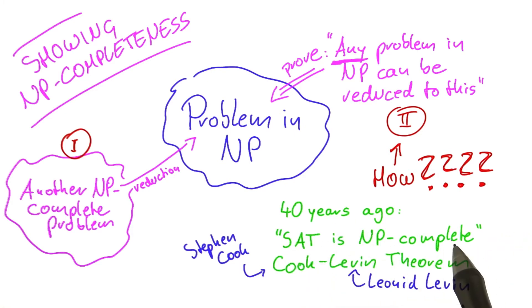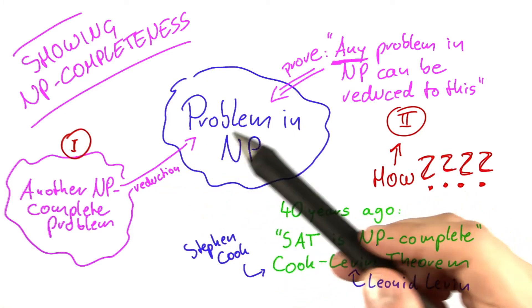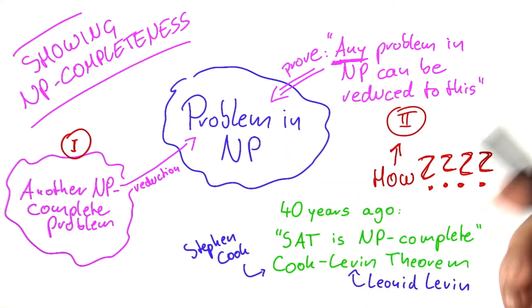And once we have shown that SAT is NP-complete, we can go back to the problems of Alice, Bob, and Carol and see if those problems are NP-complete.